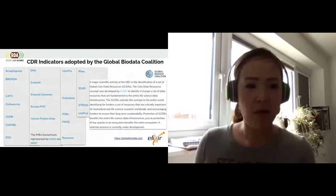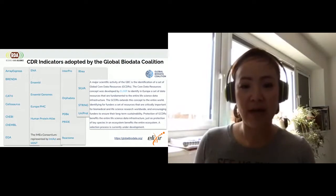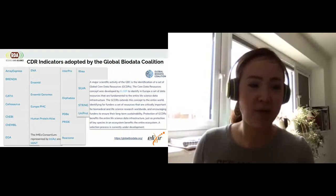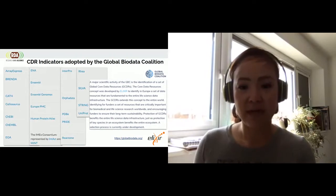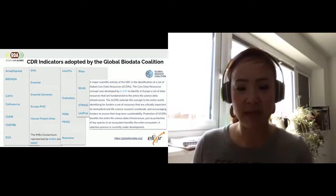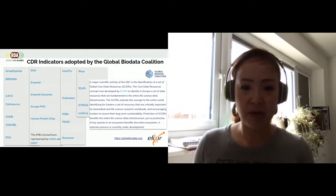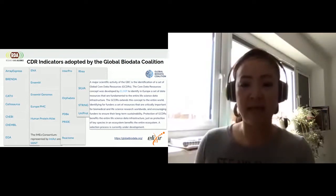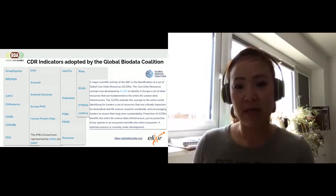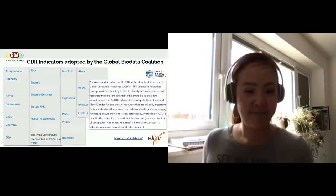Looking at the CDR currently, we have a plan to identify resources as needed. These are the current list of core data resources at ELIXIR. For the next step, because we're driving the sustainability of the data resources in the network, we have been identified as the criteria to be adopted by the Global Biodata Coalition. The collaboration between the GBC and CDR is vital to the global community, not just within the ELIXIR network.